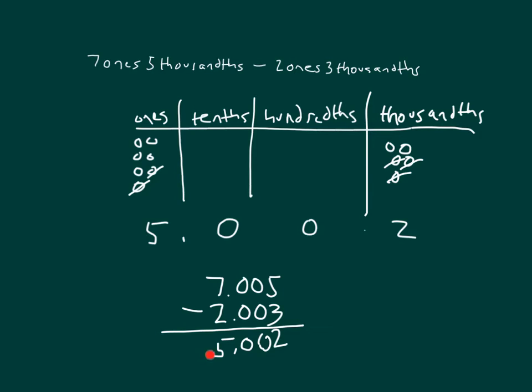So our answer, 5 and 2 thousandths, just as we have shown with our place value chart as well.